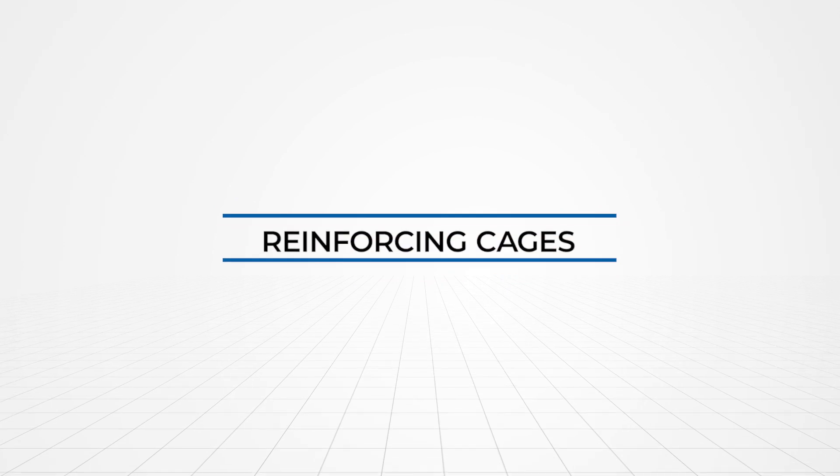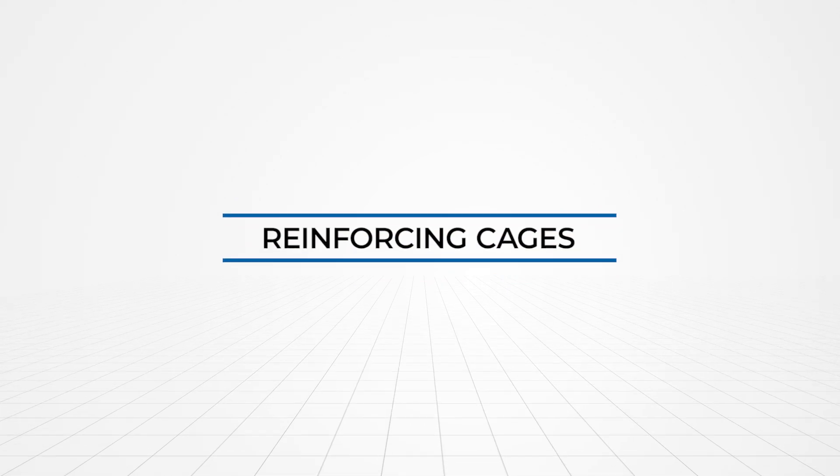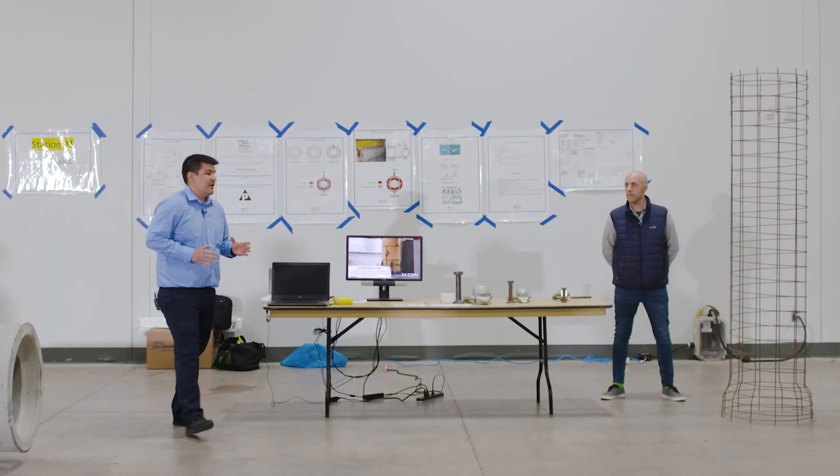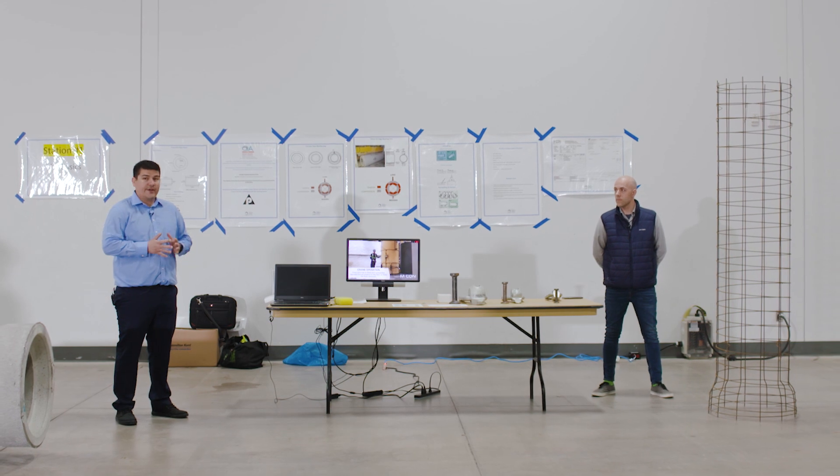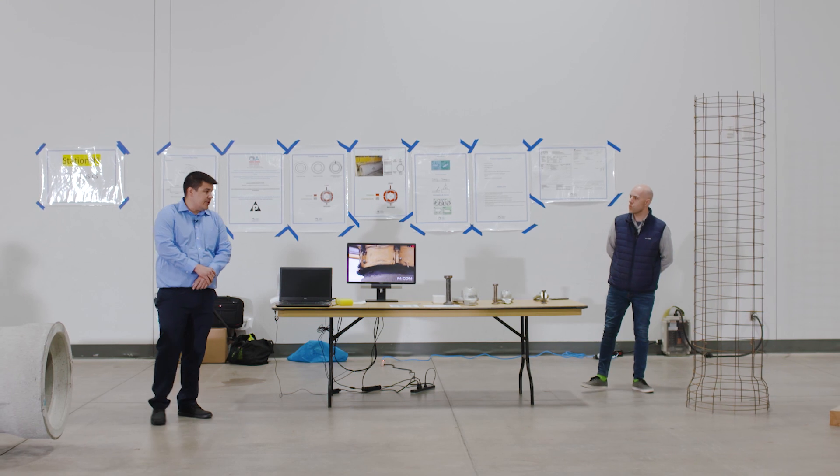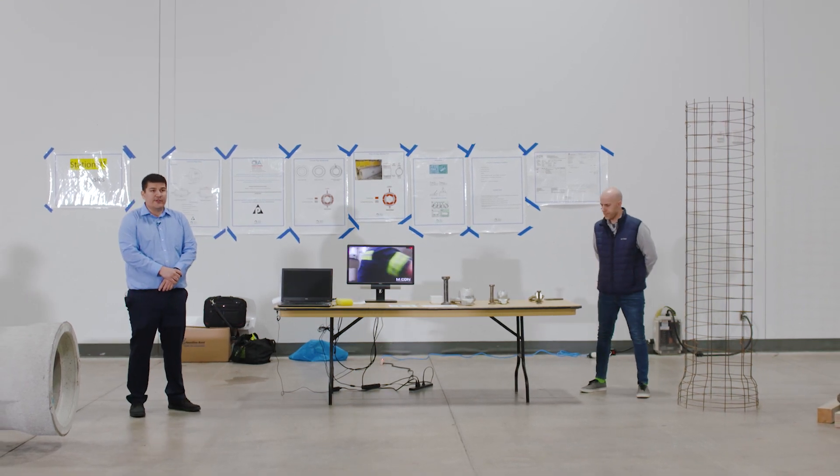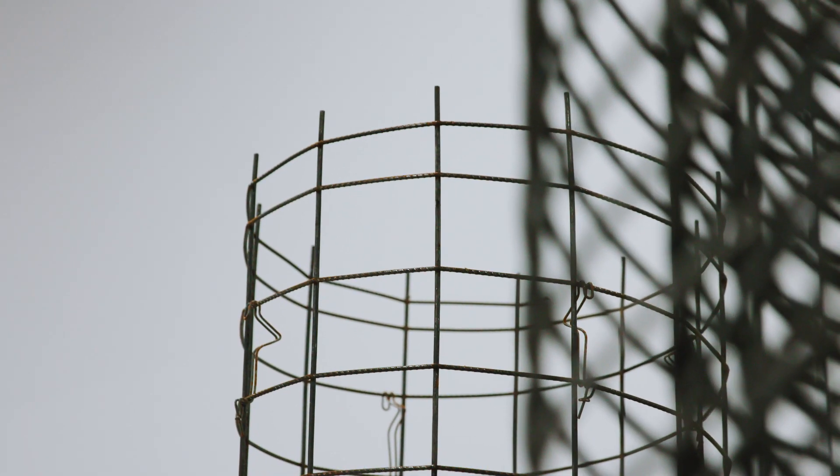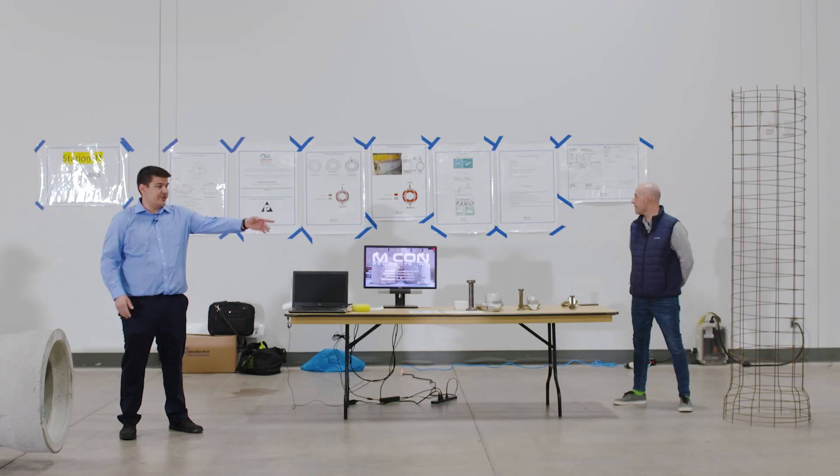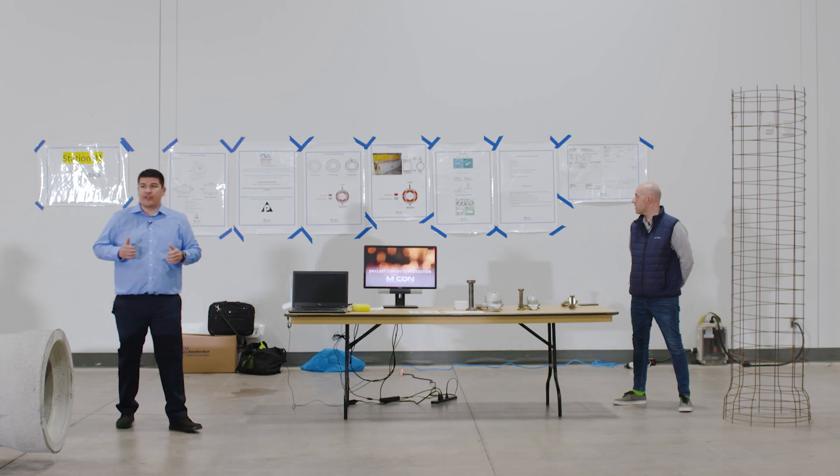We'll get into the reinforcing cages. So we have two different types of reinforcing cages here today, a single cage and a triple cage. There's also a double cage, which are the three common types of cages we use in our pipes. So a single cage, we'll use that in anything from 12 inch to 24 inch diameter. The double cage, we start using that from 27 inch up to 42 inch, all the way up to 3000 actually. But 42 inch, 54 inches here, that's when we start getting into triple cage designs for higher strength pipes.